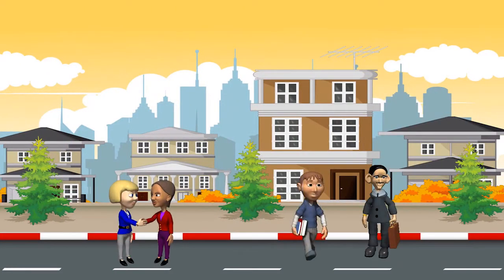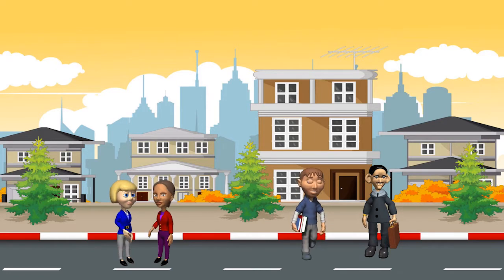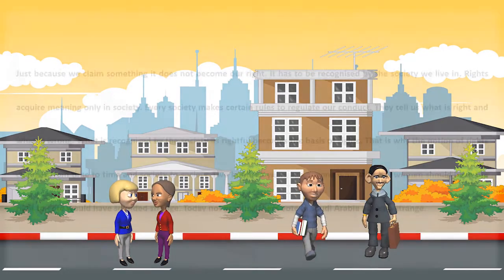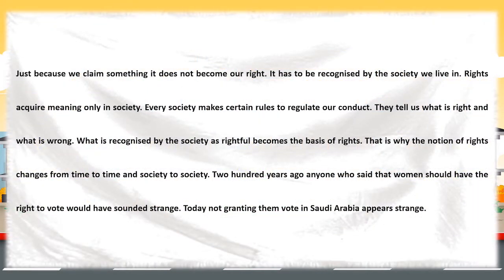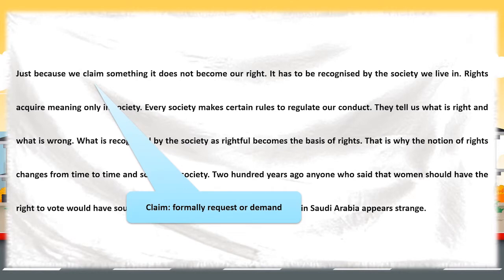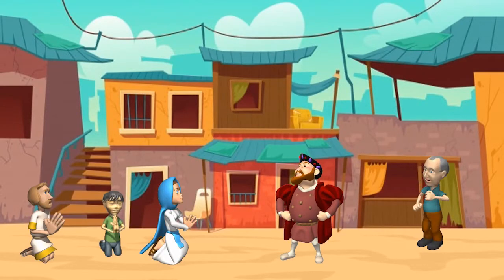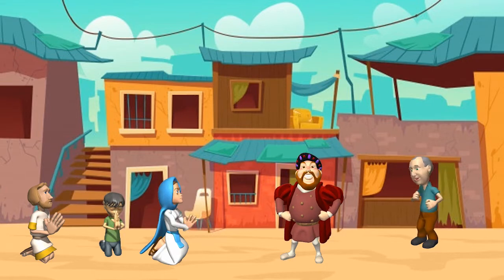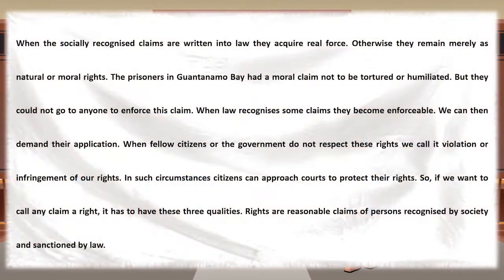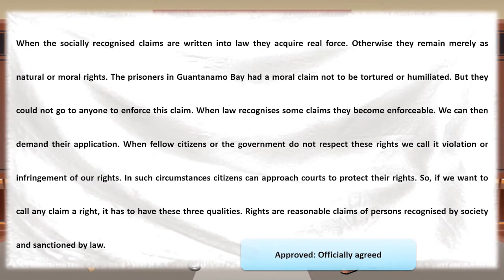Just by claiming something, it does not give us the right. A claim must be recognized by society equally among all and should be reasonable. Rights acquire meaning in a society. Every society has certain rules to decide what is right and wrong, and those rightful rules come as rights to people. This is why rights change from time to time and society to society. Socially recognized claims are truly acknowledged when they are enforced into law; otherwise they remain as moral rights. The people of Guantanamo Bay had a moral claim not to be tortured, but were unable to go to anyone to claim them.